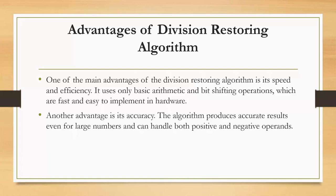Second, simplicity: The Division Restoring Algorithm is relatively simple to understand and implement. It only requires basic arithmetic operations such as addition, subtraction, and multiplication, making it accessible to a wide range of programmers. Additionally, the algorithm uses a straightforward process of trial and error to determine the quotient digits. Third, low memory usage: The algorithm requires relatively low memory usage because it does not need to store any intermediate results. Instead, it calculates the quotient and remainder digits one at a time, reducing the amount of memory required. This can be important in embedded systems and other memory-constrained environments.